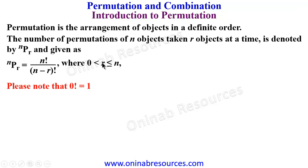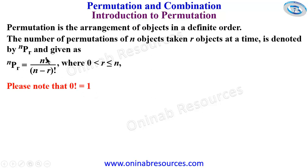If r is equal to n, we are going to have zero at the denominator, so zero factorial will be one. At that point, nPn will be equal to n factorial. So if you are permuting n objects taking n objects at a time, your permutation will just be n factorial.